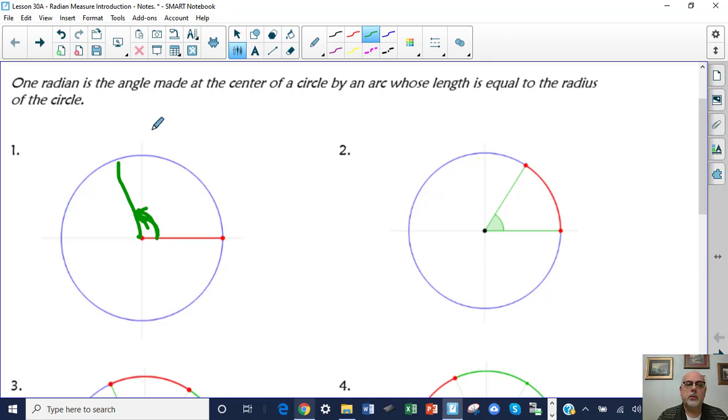Radian measure, now we're going to look at how an angle is measured based on how much of the arc of the circle or the circumference of the circle it cuts off. They're very different.